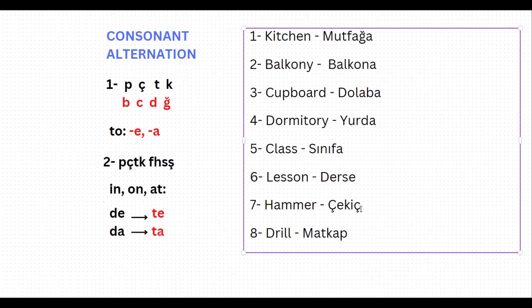Another word: 'hammer,' which is 'çekiç' in Turkish. If you want to say 'to the hammer,' it is 'çekiç-e.' The last letter is ç — will it change? It is one of peçeteğe, so it has to change to c. To the hammer: çekice.